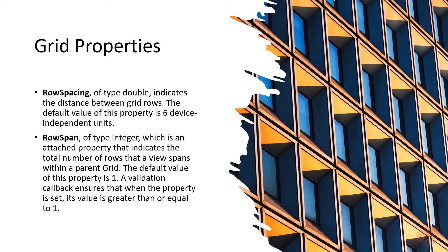RowSpacing, of type double, indicates the distance between grid rows. The default value is six device-independent units. RowSpan, of type integer, is an attached property that indicates the total number of rows a view spans within a parent grid. The default value is one. These properties are backed by bindable property objects, meaning they can be targets of data bindings and styled.